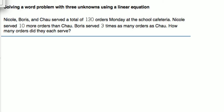We're going to solve a word problem with three unknowns using a linear equation. Let's read the problem first. It says Nicole, Boris, and Chao served a total of 130 orders Monday at the school cafeteria. Nicole served 10 more orders than Chao, and Boris served three times as many orders as Chao. How many orders did they each serve?